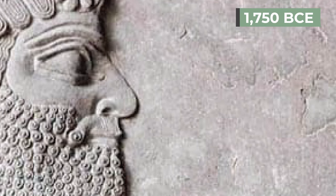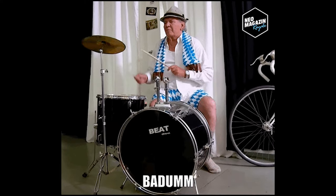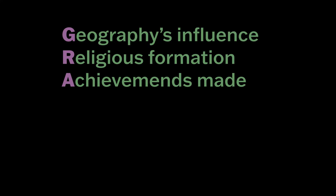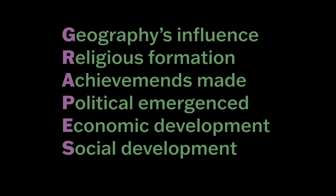It's 1,750 BCE and Hammurabi has died, effectively ending the Babylonian Empire and this activity. We've learned how geography influenced the early Mesopotamians, how their religious ideas were formed, what achievements they made, how their political systems emerged, and how their social and economic systems developed. Open up your wrap-up document and follow the directions.